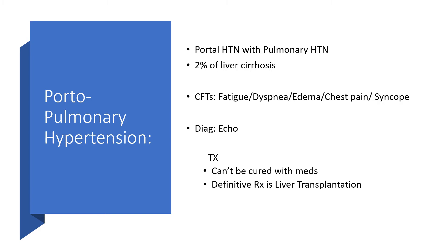Portopulmonary hypertension. Portal hypertension is occurring here with pulmonary hypertension. This will be found in 2% of liver cirrhosis. The clinical features will include fatigue, dyspnea, edema, chest pain, and syncope. The best way to make the diagnosis is ECHO. We treat here by liver transplantation as the definitive treatment, because it cannot be cured with medications.